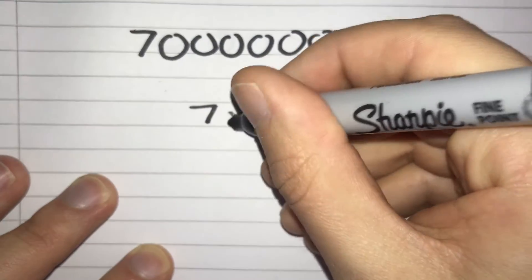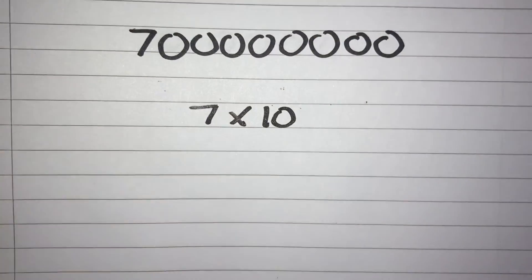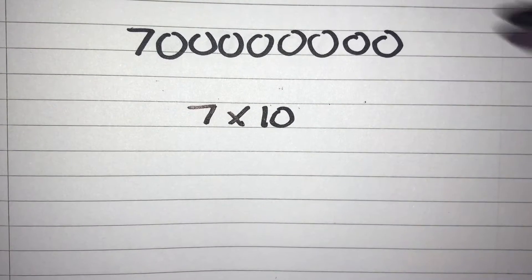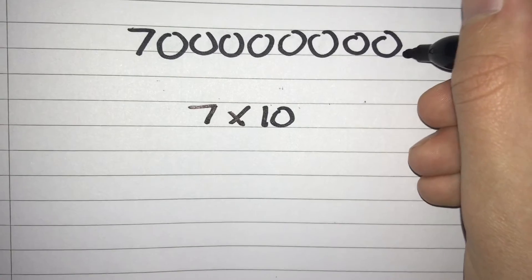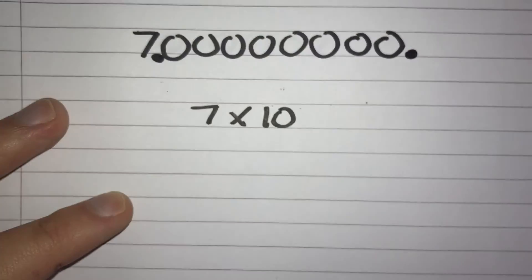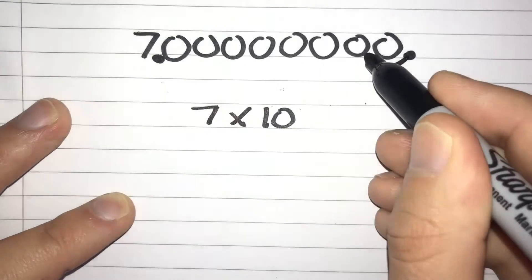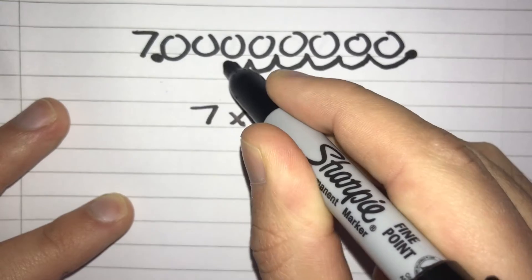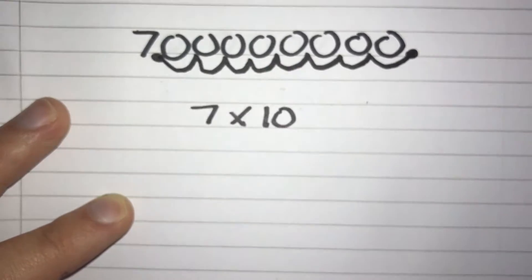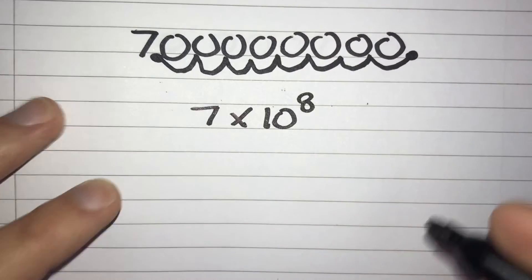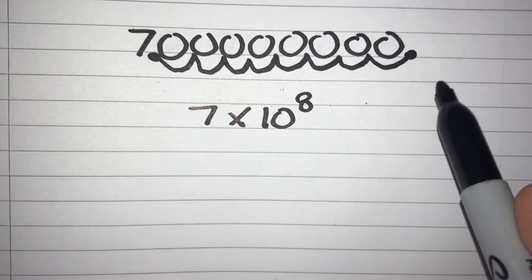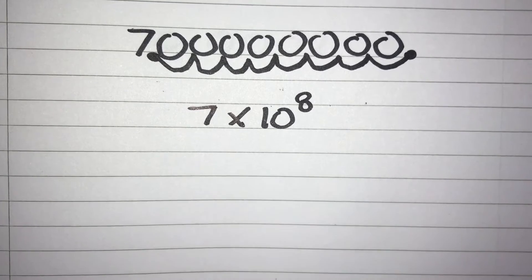It's going to be multiplied by 10 to the power of something. To get this power we need to see how many spaces our decimal point has moved from where it began right at the end to where it's ended up just after this 7. Counting the spaces: 1, 2, 3, 4, 5, 6, 7, 8 spaces. So our power is 8, and our number in standard form for this large number would be 7 times 10 to the power of 8.